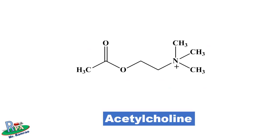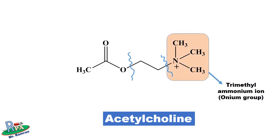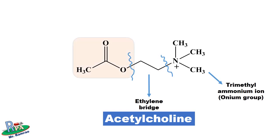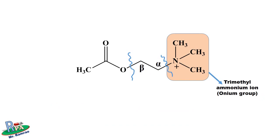First draw the structure of acetylcholine and then divide it into three parts. The first part is the trimethylammonium ion, also known as the onium group. The second part is the ethylene bridge, and the last one is the acetyloxy group. The ethylene bridge consists of two carbons — the carbon adjacent to the ammonium group is the alpha carbon, and the next carbon is the beta carbon.